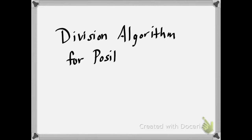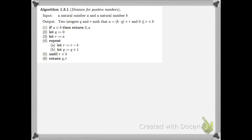Let's take a look at division for positive integers. Here's the algorithm for division for positive integers from your notes. It takes as input two natural numbers A and B, and outputs two integers Q and R that satisfy these properties.